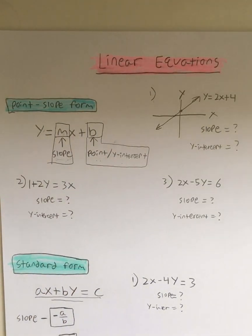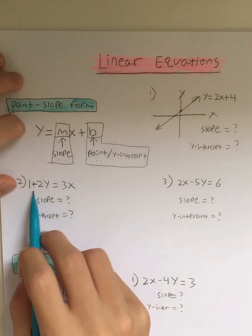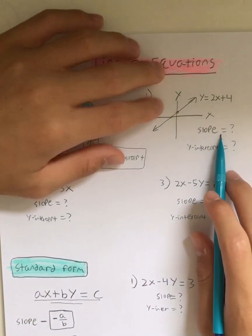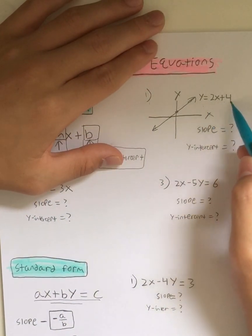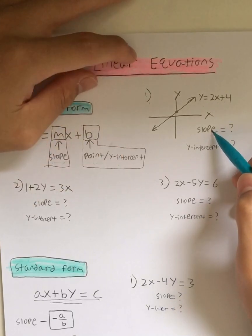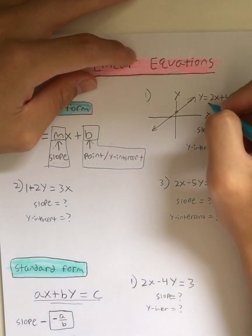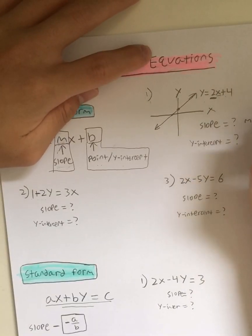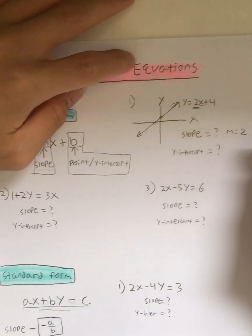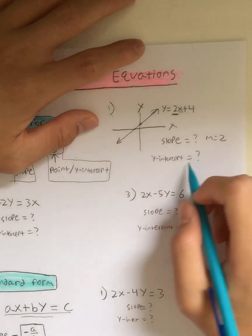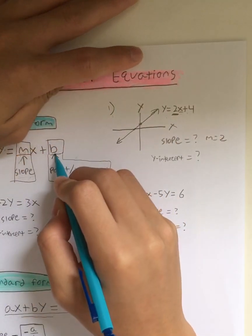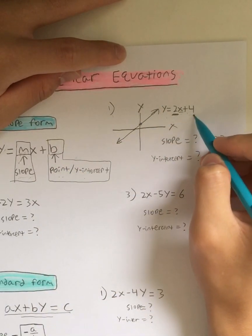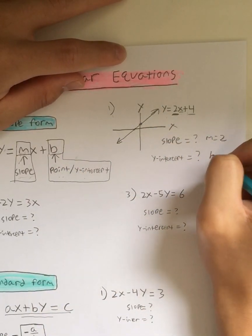Let's practice an example. Let's do example 1: y is equal to 2x plus 4. So what is the slope? As I said, m is the slope — in this case it's 2, whatever is in front of the x. So m is equal to 2. And what is the y-intercept? The y-intercept is b, and the value of b here is 4. So b is equal to 4.